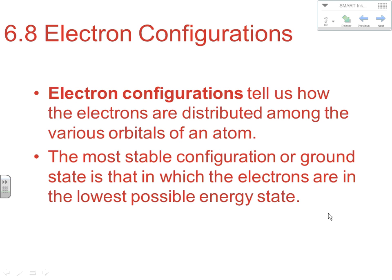Welcome to AP Chemistry at Hononegah High School. Today we'll be looking at our last set of notes over Chapter 6, dealing with the last few sections — specifically electron configurations, how to do them, and some exceptions in electron configurations.